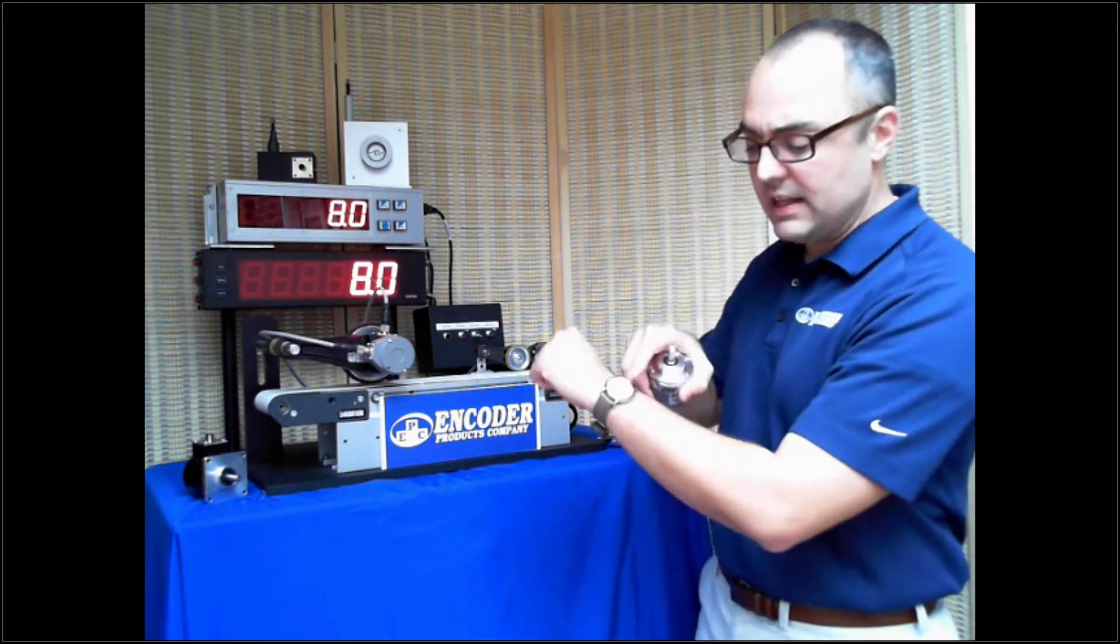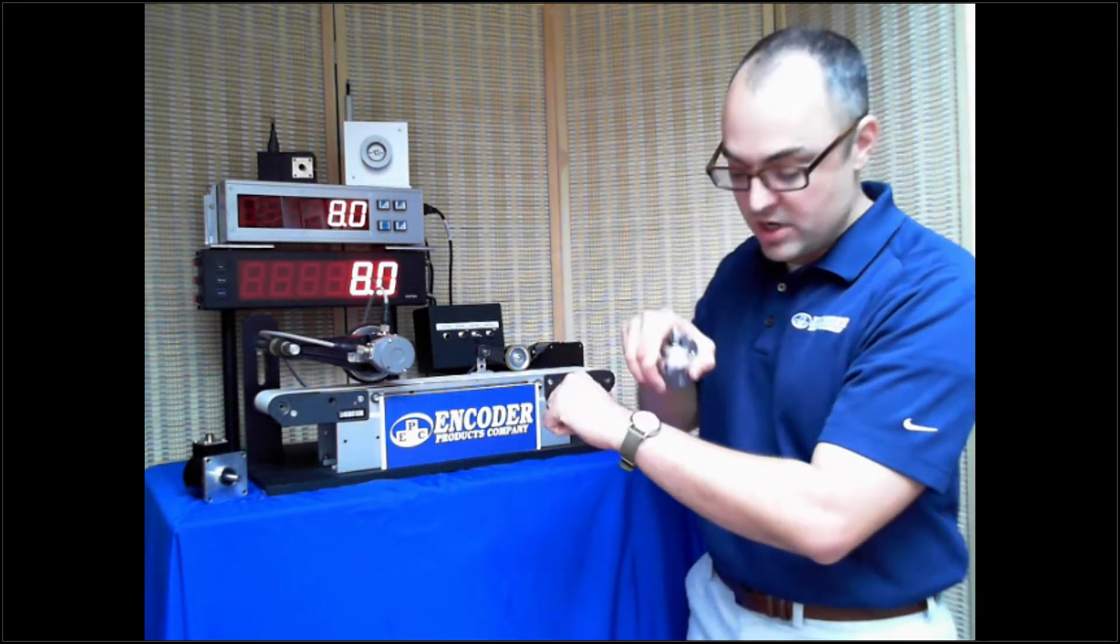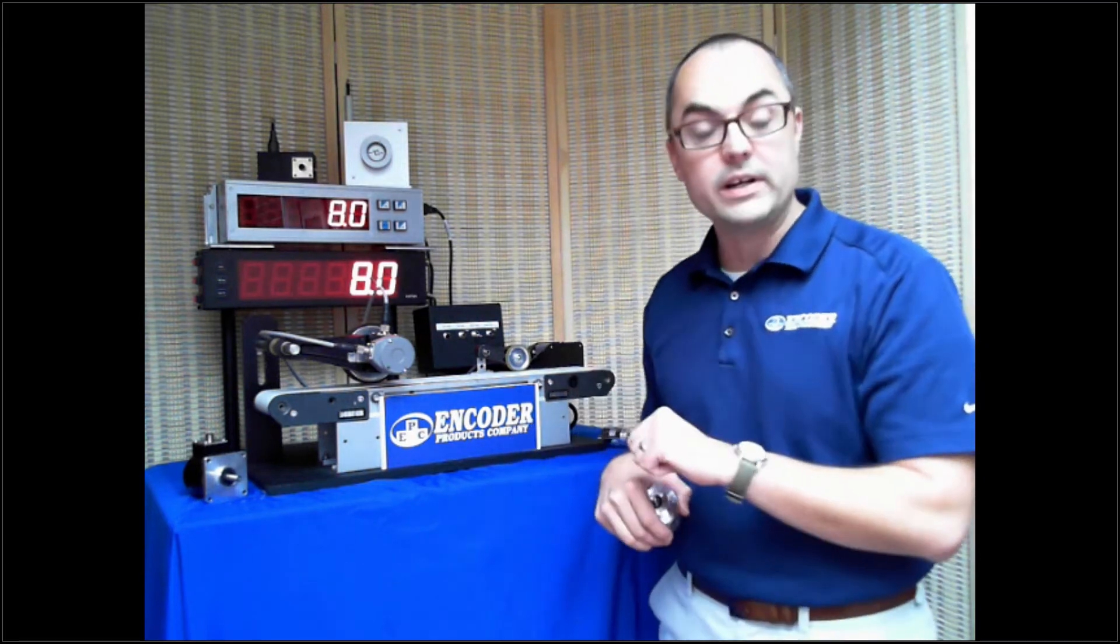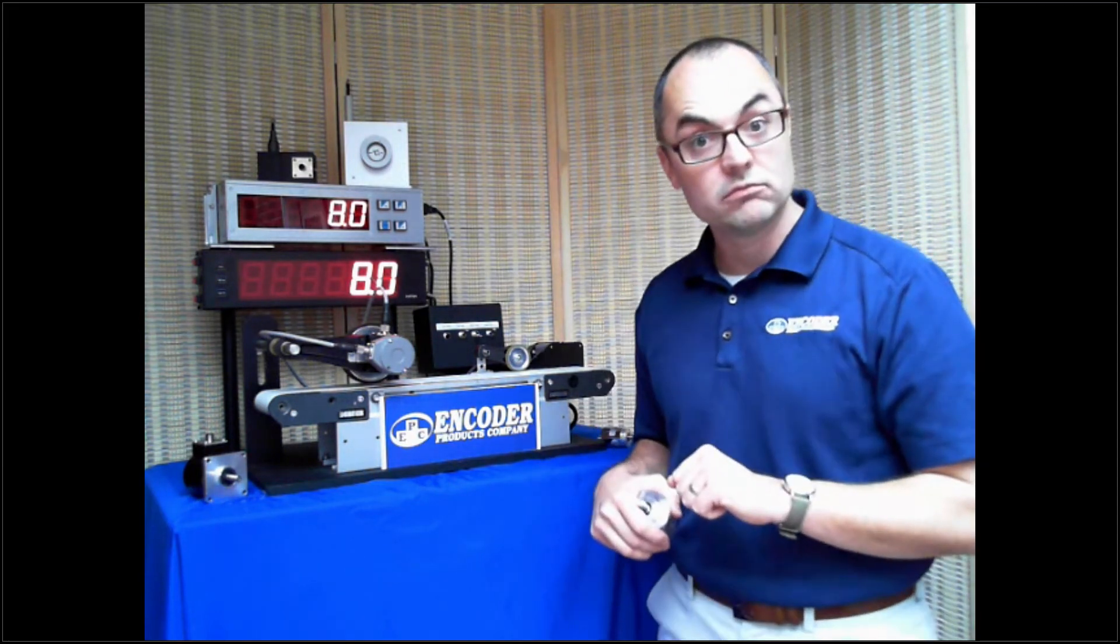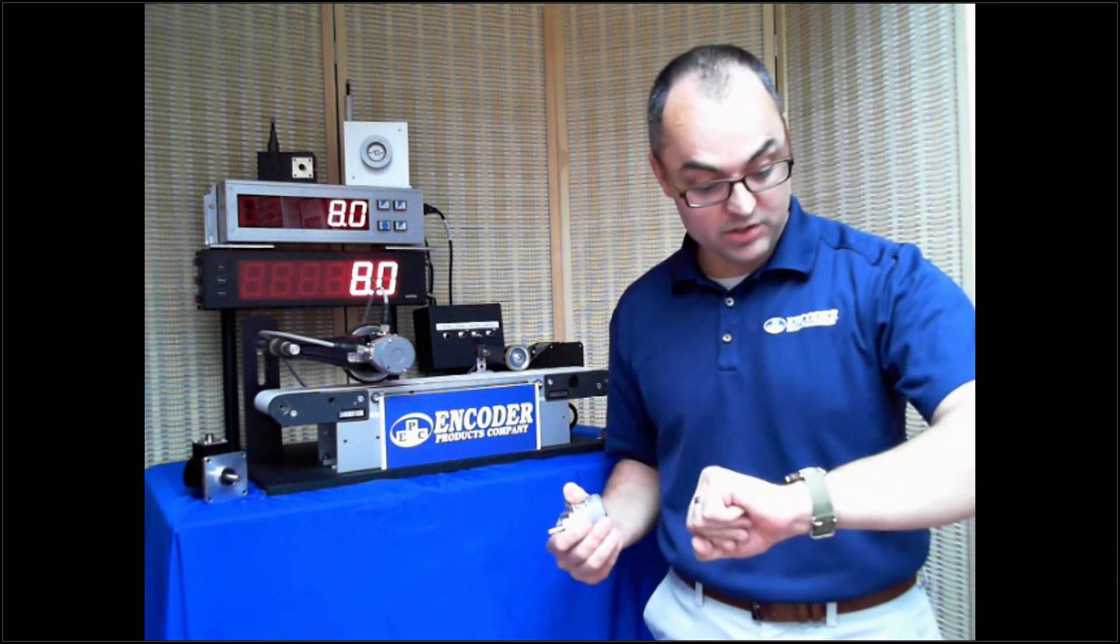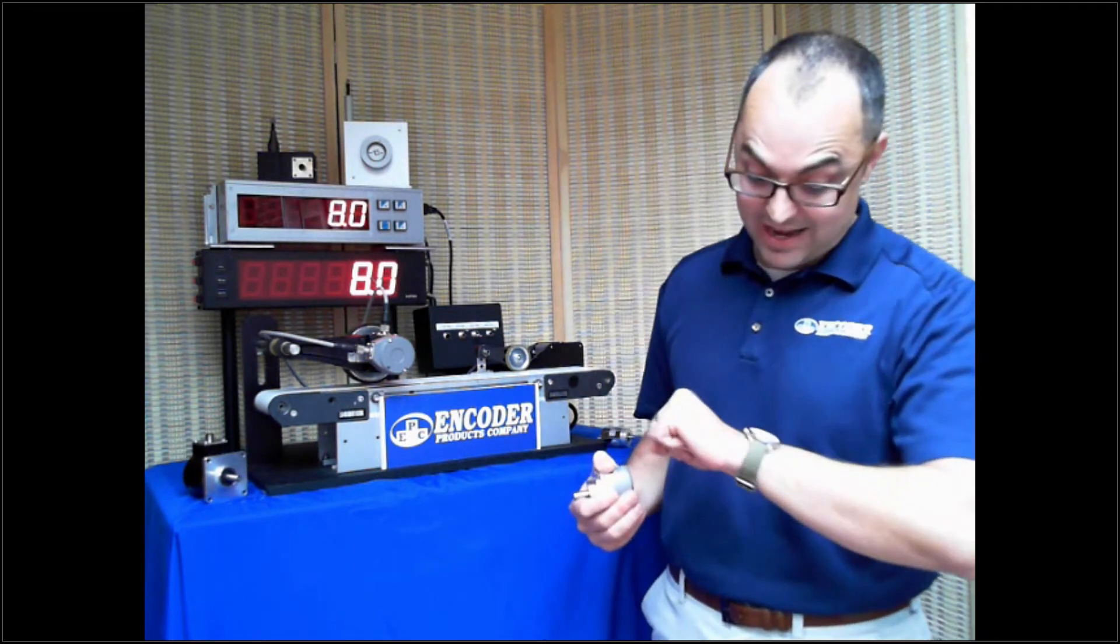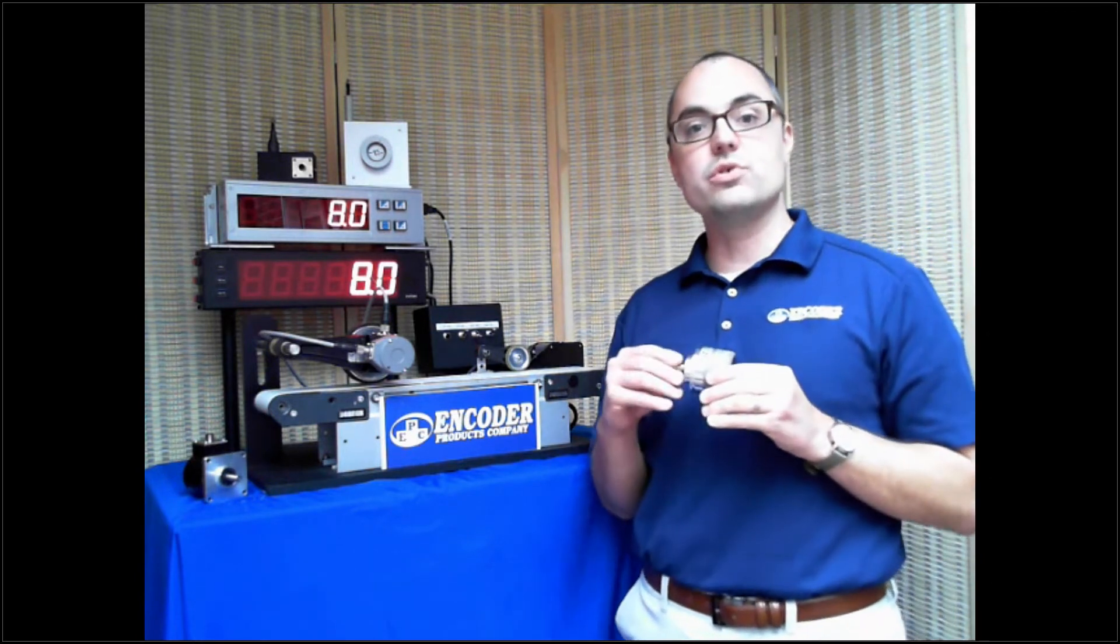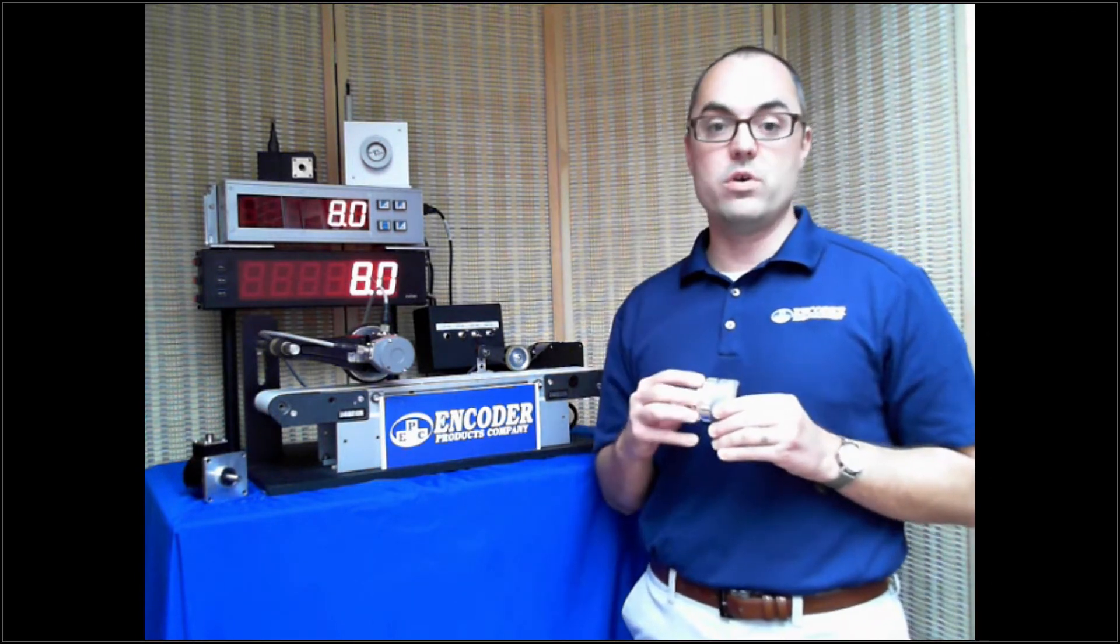An absolute encoder is a lot like putting the numbers on the face of the watch. It gives you a discrete position. I can look at my watch and say it's 11:20, 11:31 now. And then I can wait five minutes and I can look back at my watch and say it's 11:36. I didn't have to actually watch and listen for the ticks. That's what an absolute encoder does. It gives you a discrete position whenever you query it.